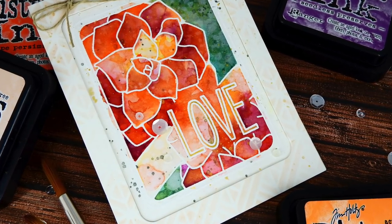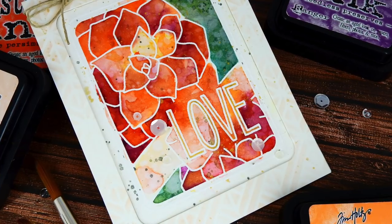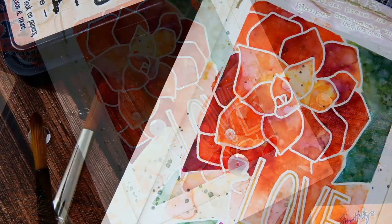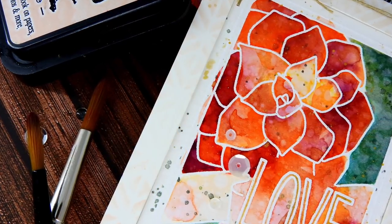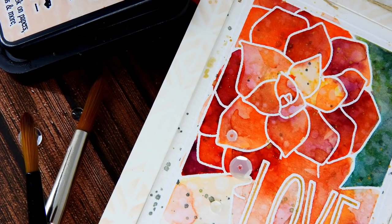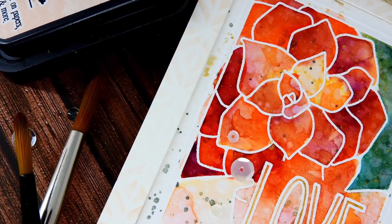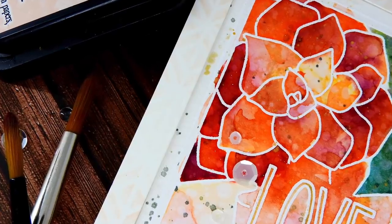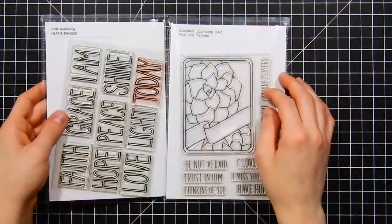Today I'm here with Neat & Tangled featuring a fun recessed panel and Distress Ink watercoloring. I'm going to be using the new Succulents Journaling Card Stamp Set and also the coordinating dies. These just came out this past month and I really love how this card allows you to create such fun and easy cards really quickly.